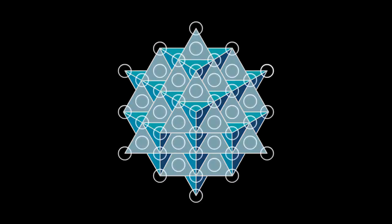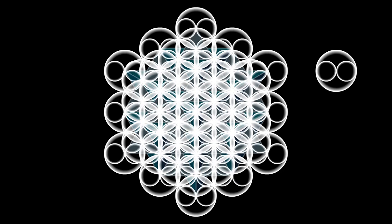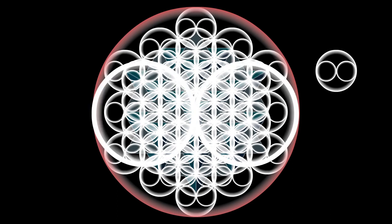If this structure is the male component, then the female component would be the toroidal flow between and around all of the points. Imagine that every sphere in and of itself is a torus, each with a singularity of its own, but the larger fractal is a larger sphere also with a singularity of which all of the other toroids are connected to.